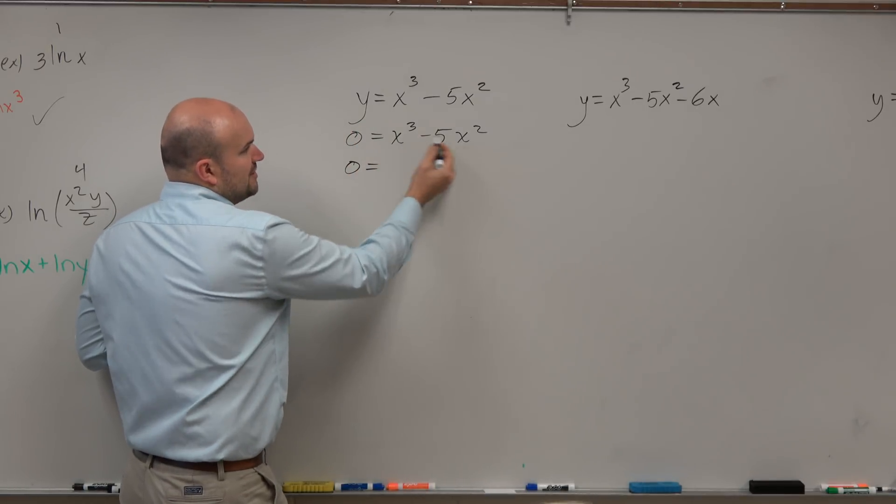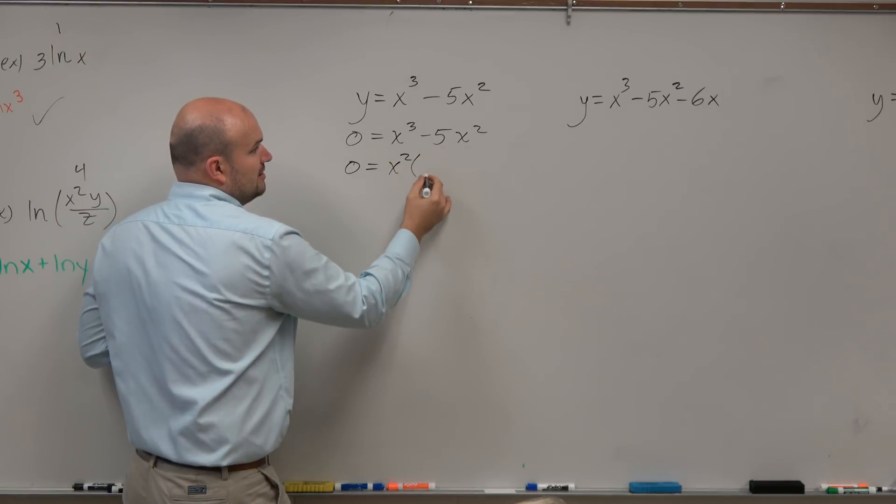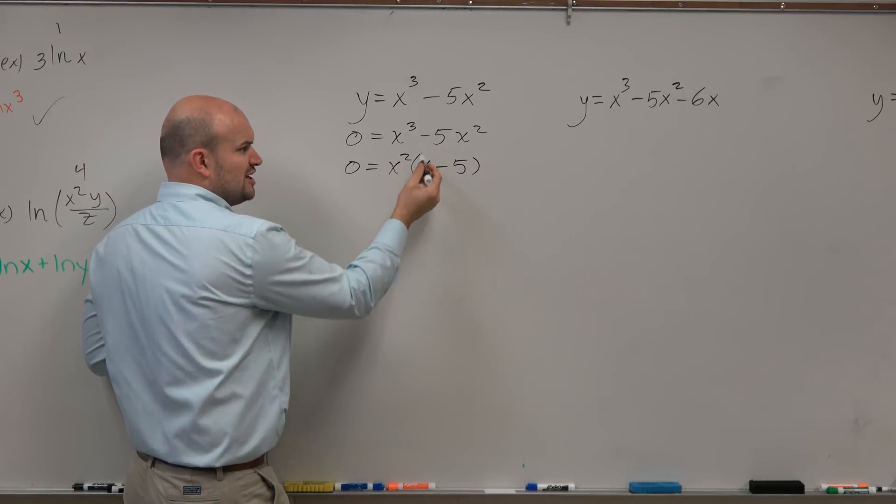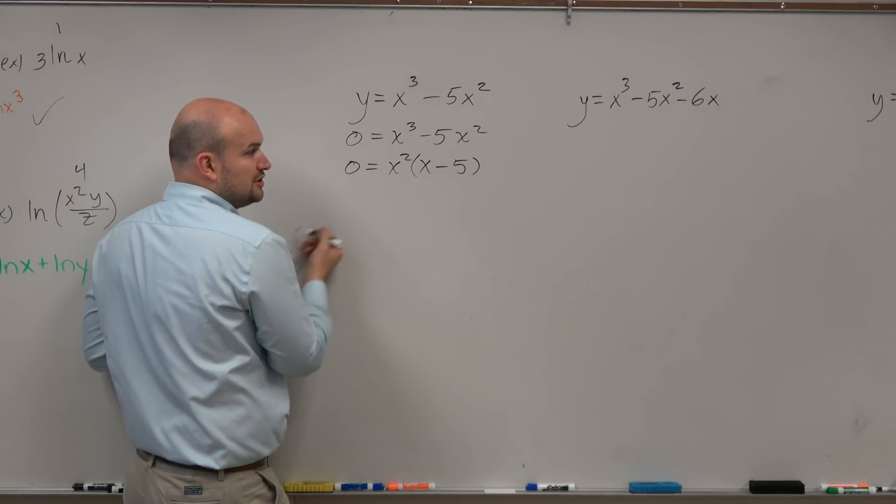So in this case, I need to see what do they have in common. You can see they have an x squared. When I factor out an x squared, I get x minus 5. Again, check your answer. Multiply the x squared times both those terms. We're good to go.